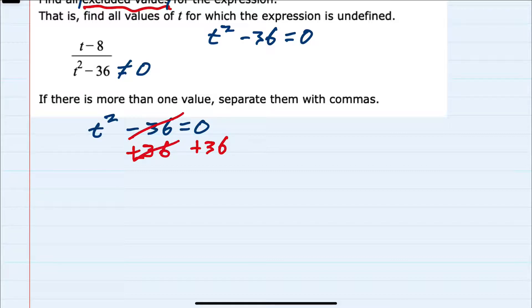Canceling on the left would leave us with t squared equals 36. And then to remove the t squared and find t, I would take the square root of each side.